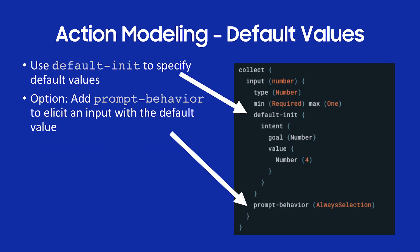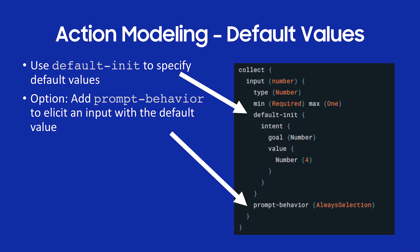Default values: if you want to set a default value for a concept, in my example I'm using 'default init' and setting the number to four. Bixby would use four as the default value. But if I want to tell the user the default is four while letting them change it, I use prompt behavior always selection. That forces Bixby to elicit the input but tells the user that four has already been set as the default value.